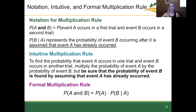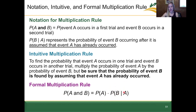Formally, the multiplication rule notation: P(A and B) = P(A) × P(B|A). We can't just say P(A) multiplied by P(B) — we must specify P(B|A) because the probability of B relies on the fact that A did already occur.